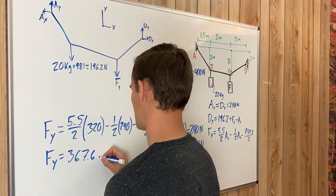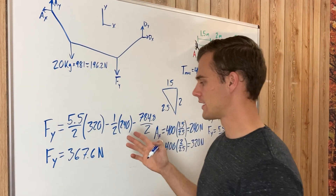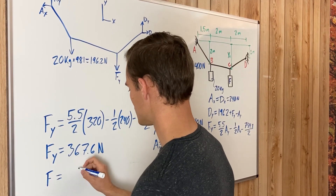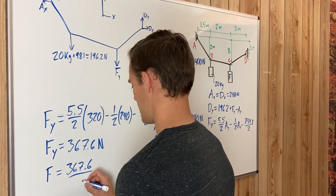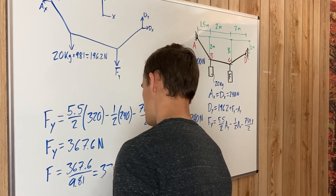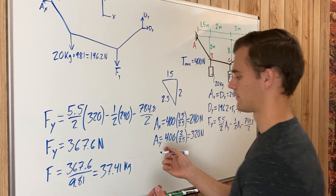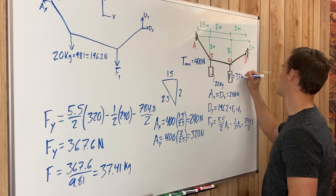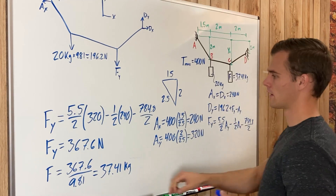We need to find the mass of F, not the force. So mass of F equals 367.6 divided by the acceleration of gravity 9.81, which gives 37.41 kilograms. That's one of our answers — we've found the mass of F.